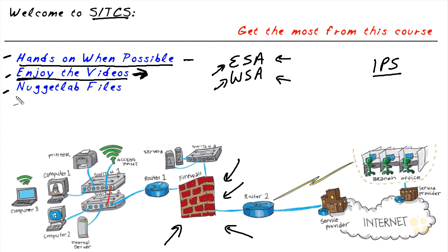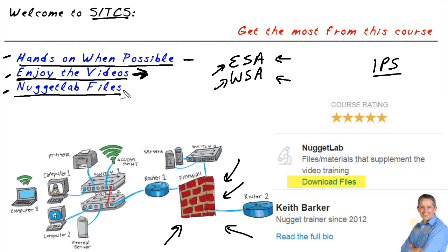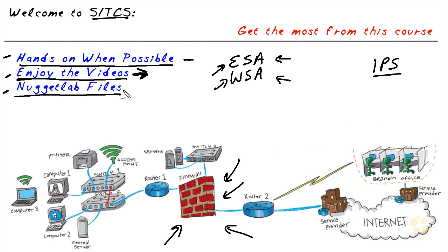Another resource I would encourage you to use is our Nugget Lab files. They can be downloaded from cbtnuggets.com — log in, go to this course, and over to the right there's a link for the Nugget Lab files. I would encourage you to download those and use them as additional resources. I'll refer to many of the documents in the Nugget Lab files as we go through specific nuggets, and I encourage you to look at every single document included as an additional resource to help you master the concepts that Cisco wants you to be aware of as a CCNP Security certified individual.